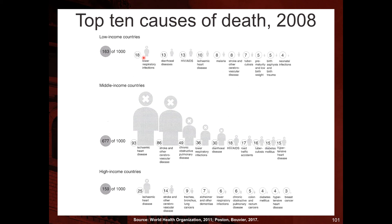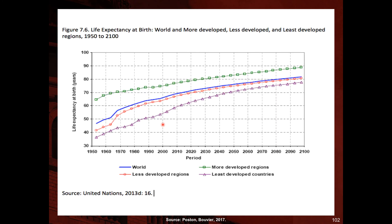The top causes of death differ across low-income, middle-income, and high-income countries. Because most people are concentrated in middle-income countries, the largest absolute numbers of deaths are seen in that group.